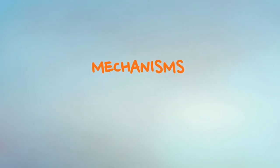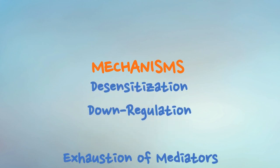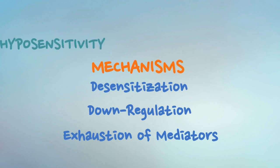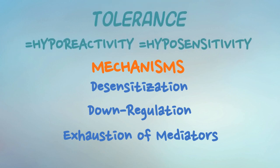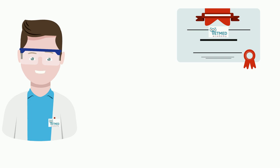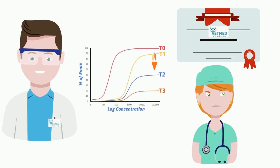The body has mechanisms by which it can adapt to the administration of multiple doses of a drug or toxin, and both receptor and signal transduction mechanisms can be involved with this adaptation. This general term for developed hyporeactivity is called tolerance. However, the mechanisms leading to tolerance after chronic dosing may be difficult to distinguish from the individual patient unless a complete dose-response study is performed, and this isn't very practical.